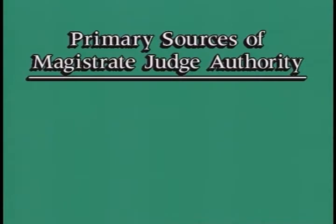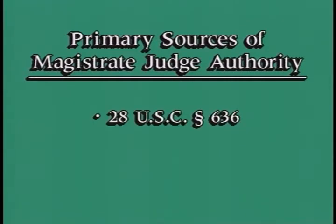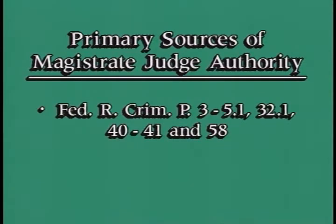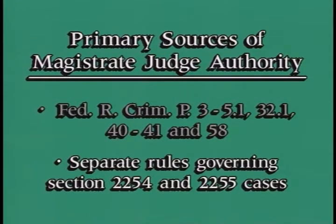I speak, of course, of United States Magistrate Judges. The primary sources of Magistrate Judge authority are 28 United States Code Section 636, Federal Rules of Civil Procedure 72–76, Federal Rules of Criminal Procedure 3–5.1, 32.1, 40–41, and 58, and the separate rules for Section 2254 and 2255 cases.